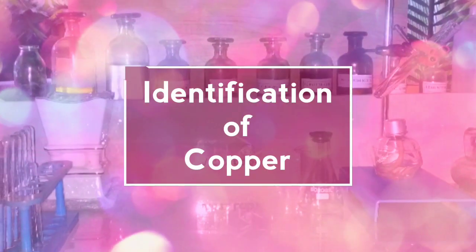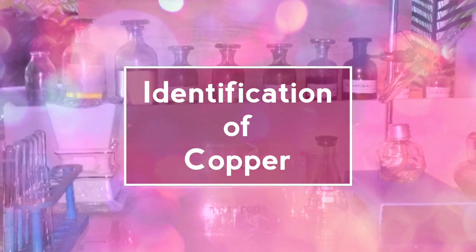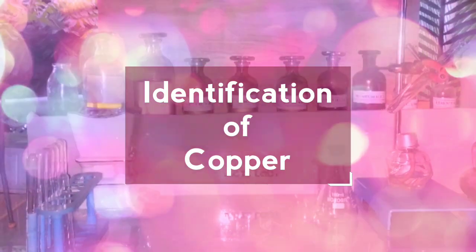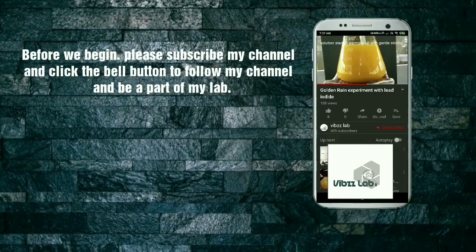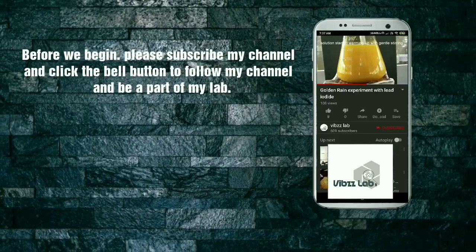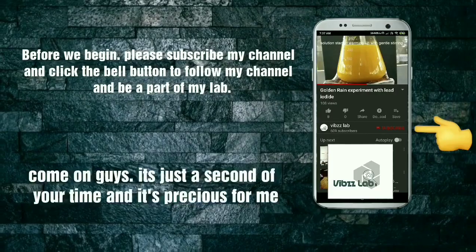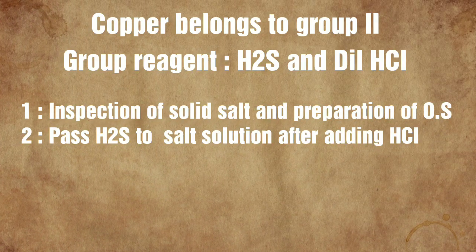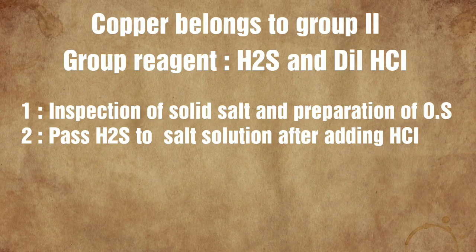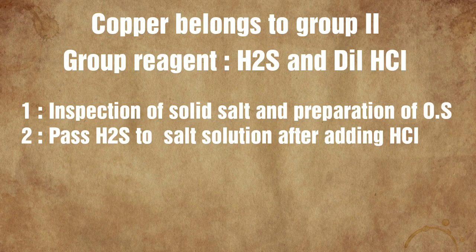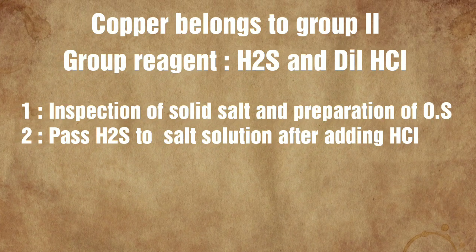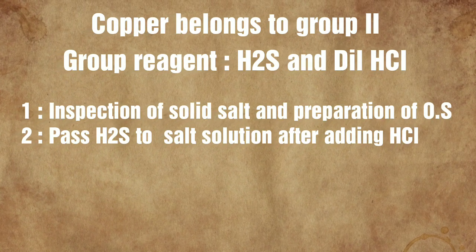Hello friends, today we would be doing the identification of copper ions. Copper belongs to group 2. The group reagent is hydrogen sulfide and dilute hydrochloric acid.